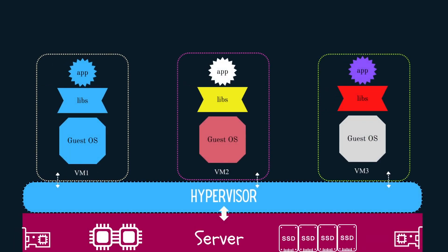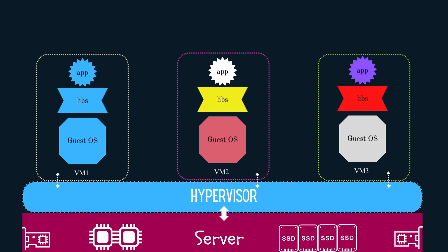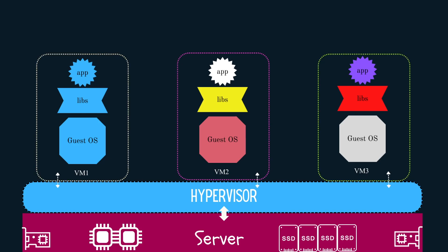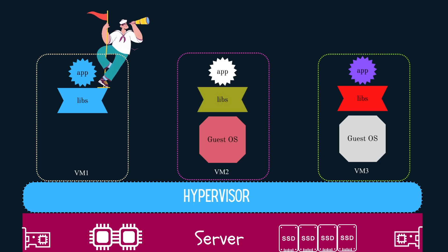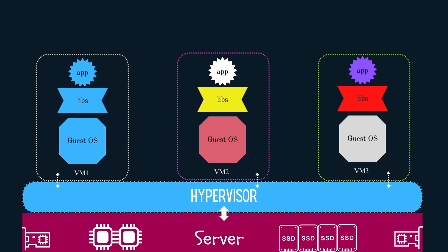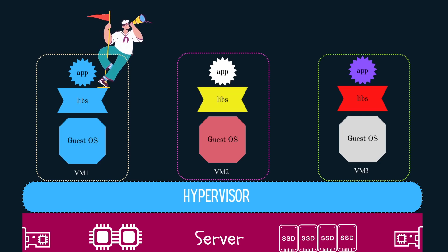As shown here, a hypervisor sits on top of the physical hardware and helps run operating systems virtually. Isolation remains in place, which makes each virtual server think that it is running on a physical server independently. Each virtual server can have its own desired operating system, application-specific library files, and applications. In our example, a single physical server can now run three virtual servers, each having their own OS type and application along with required libraries.